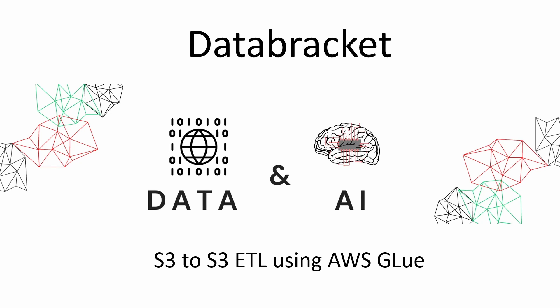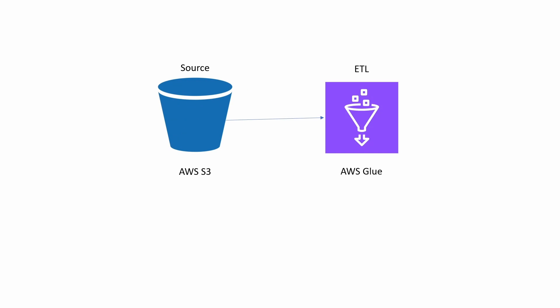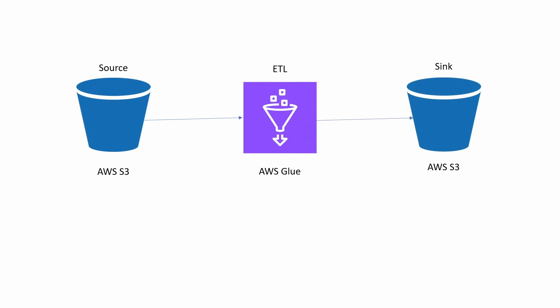Hello everyone, welcome back to Data Bracket. In this demo we are going to see how to perform an ETL using AWS Glue. We are going to query S3 data from AWS and perform ETL operations — basic filtering, selecting, dropping a few columns, and renaming columns as well. This is the first part of the series, so I'll keep it simple. The transformed data will be written back to the AWS S3 bucket.